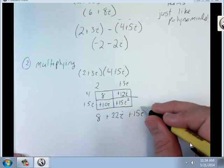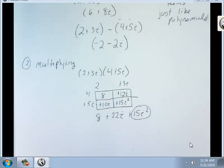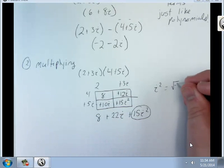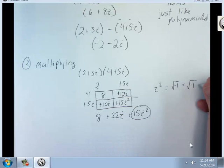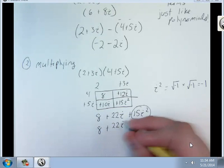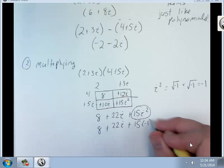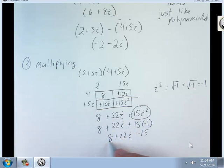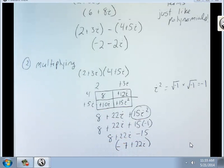But we don't like i squared. i squared is square root of negative 1 times square root of negative 1, which equals negative 1. So this is 8 plus 22i plus 15 times negative 1, which is 8 plus 22i minus 15. 8 minus 15 is negative 7 plus 22i. And that's going to bring us into our next thing.